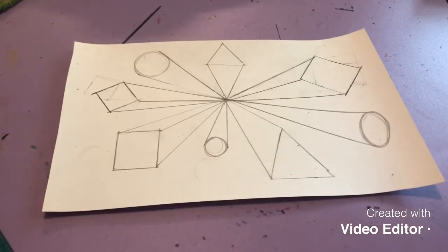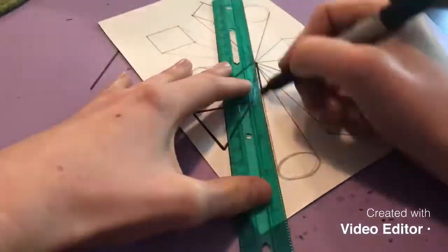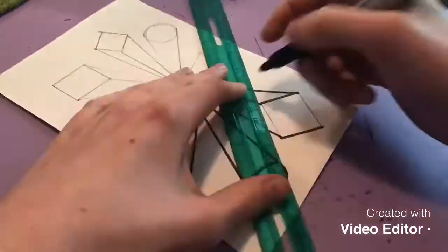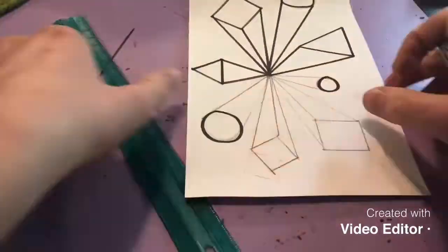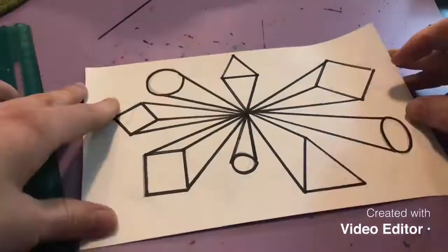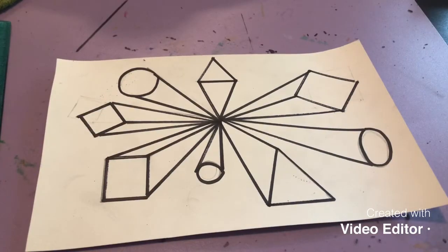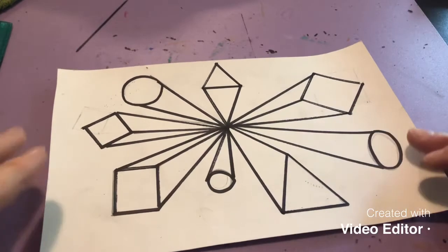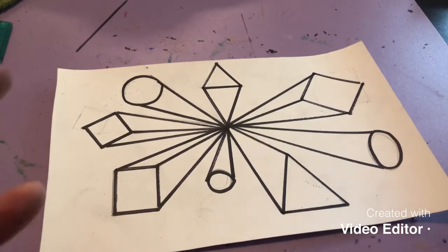And so the next step is you are going to trace them in marker. Okay so now that I've traced my shapes I'm actually going to use value to make them look even more 3D.